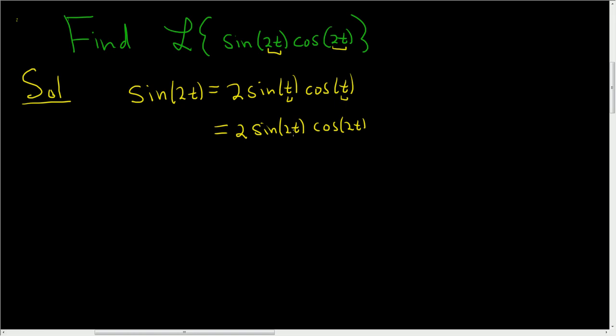But if we put 2t's here, we have to put a 2t here for the t. So 2 times 2t equals 4t. So we get sine of 4t is 2 sine 2t cosine 2t.